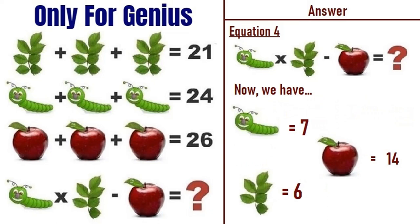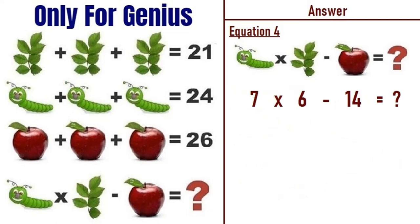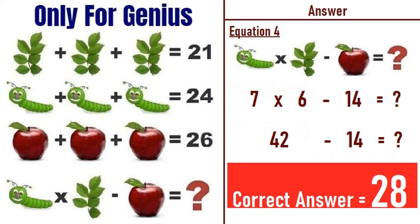Putting all these values into equation four, we have seven times six minus fourteen equals question mark. Applying BODMAS, we do multiplication first: seven times six is 42, minus fourteen gives 28. So the correct answer to this puzzle is 28.